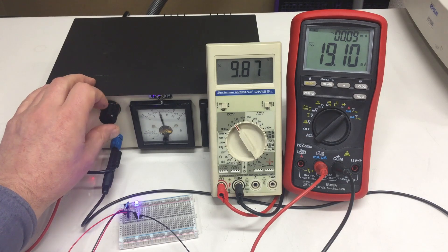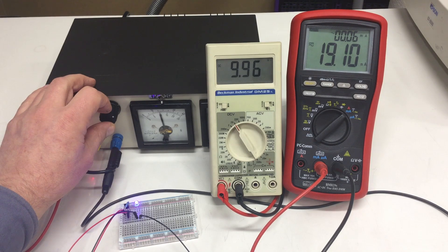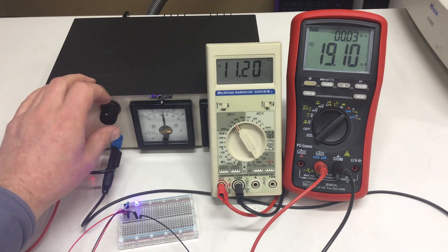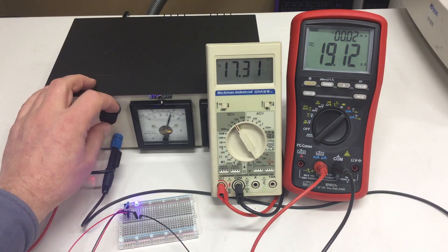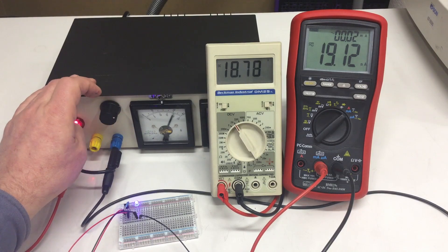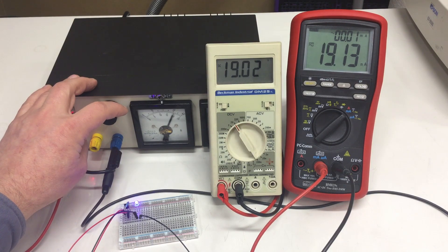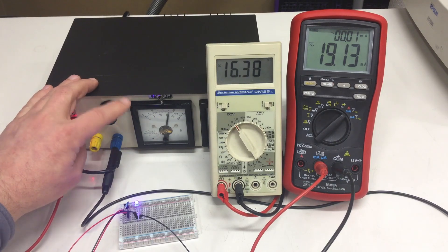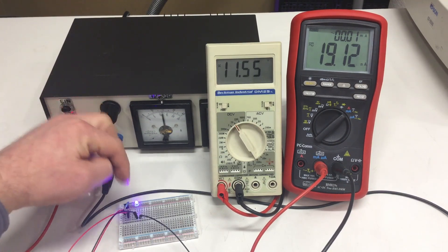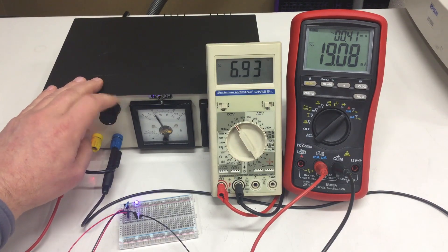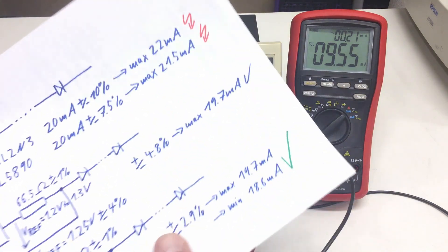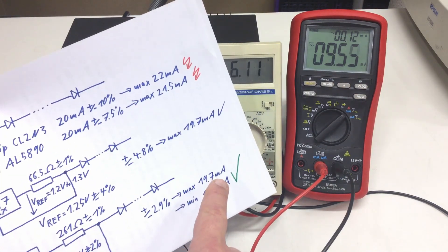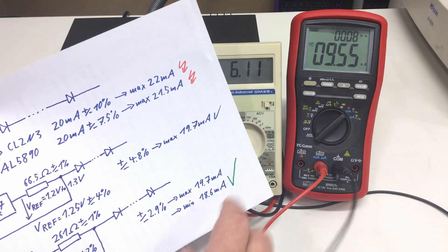When we get a little bit higher, we are at 19.1 milliamps. We can drive the voltage up and we stay at 19.1, 19.12, 19.13, that's okay. I don't want to burn that regulator with too much voltage drop. 19.1 is pretty much in the middle between 19.7 and 18.6 milliamps, so we are fine here.